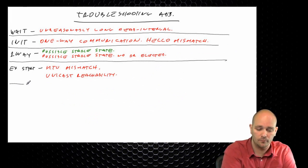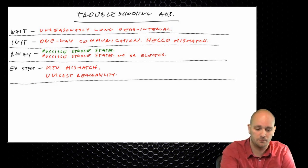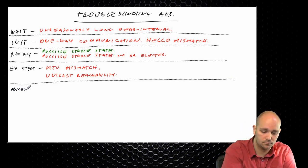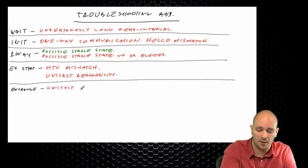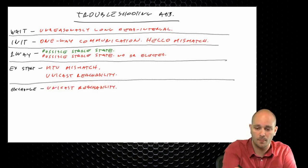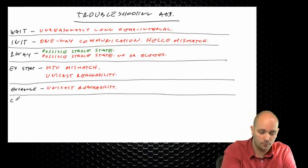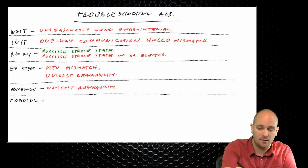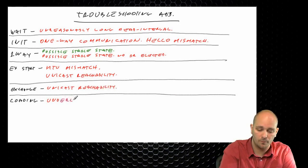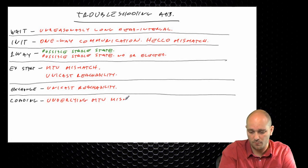There are other reasons routers could be stuck in two-way, such as access lists, but the most obvious one is no DR elected. You can also change the network type to point-to-point to avoid DR/BDR election entirely. For exchange start, the number one reason for being stuck there is an MTU mismatch — if two routers claim different MTU sizes, they'll be stuck in exchange start.